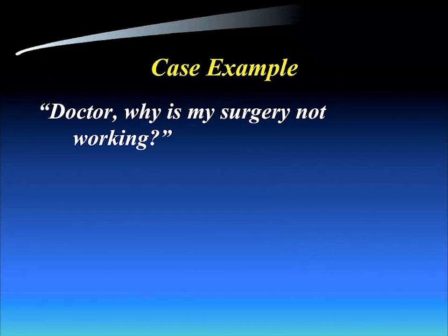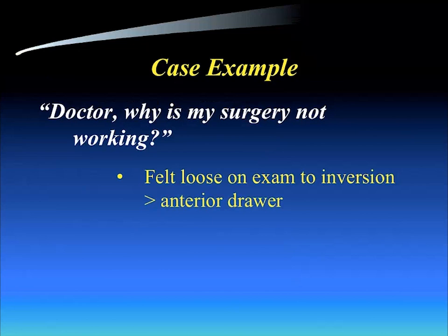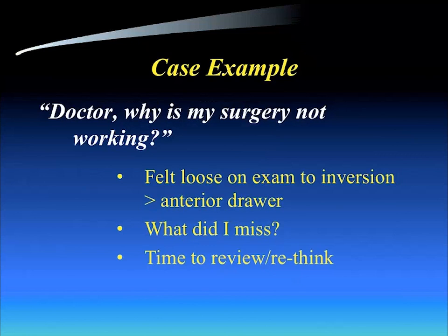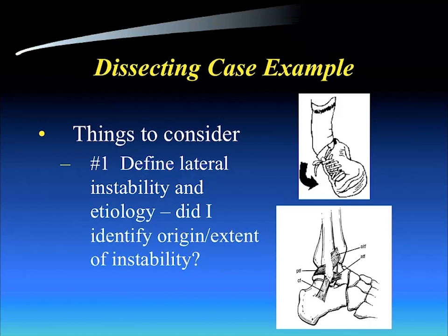This is the typical patient response: 'Doctor, why is my surgery not working?' On his exam, I felt he was loose to inversion, more so than anterior drawer. I was thinking, what did I miss? It was time to sit back and review this case and rethink: was the modified Brostrum-Gould good for everyone? There are some things to consider when you dissect through this case.